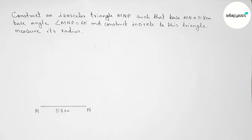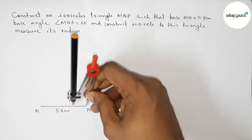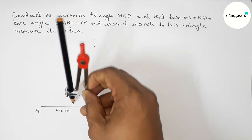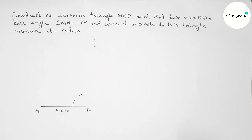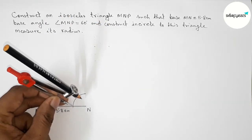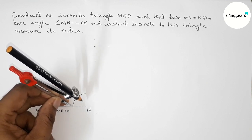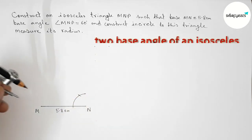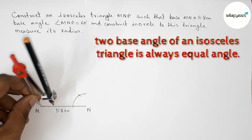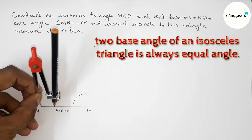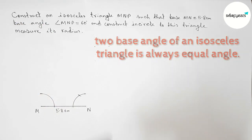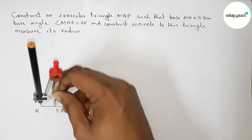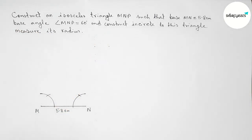Next we have to construct a 60 degree angle at point N. Taking any length, drawing an arc, then putting the compass with the same length and cutting here. Since the two base angles of an isosceles triangle are always equal, we similarly construct a 60 degree angle at point M in the same way.